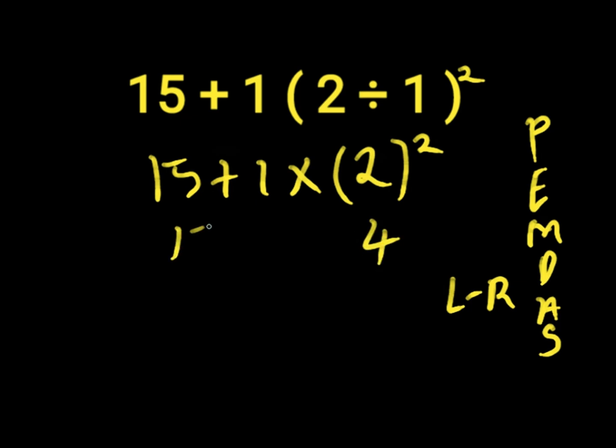Then we have 15 plus 1 times 4. We solve multiplication first because it comes before addition. 1 times 4 gives us 4. Then 15 plus 4 gives us 19. So 19 is the correct answer to this expression.